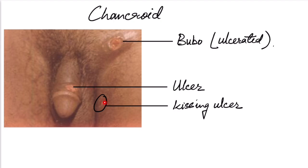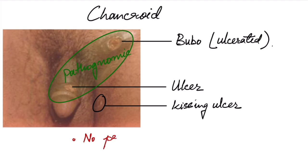The bubo and ulcer together makes the pathognomonic sign of chancroid if both are present together. Some important points: there is no prodrome in chancroid infection and there are no systemic features in chancroid because these bacteria cannot survive above 35 degrees Celsius and thus there is no bacteremia in chancroid.